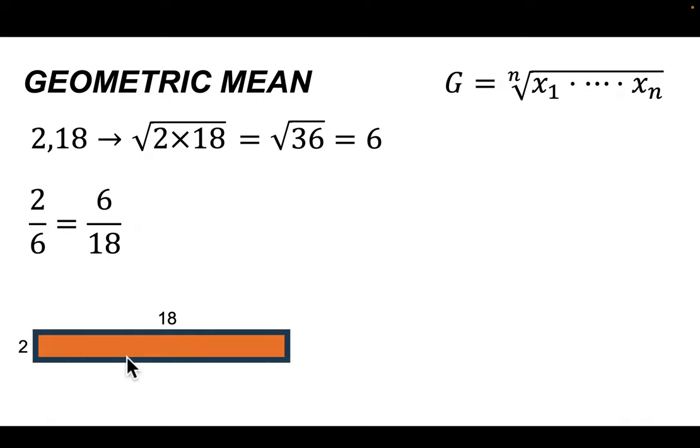In terms of shapes, if you have two by 18, the geometric mean is the side length of a square with equal area. Isn't that cool? Like this is an area of 36. Well, so is this.